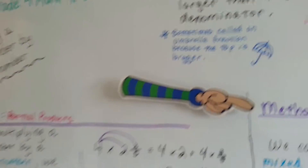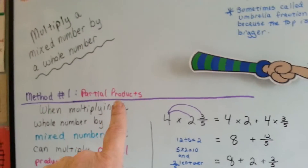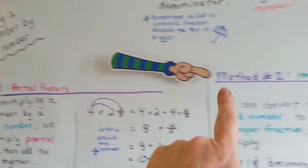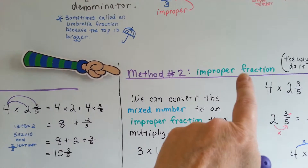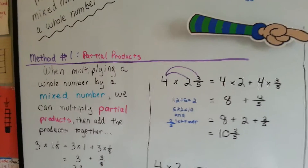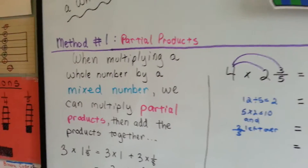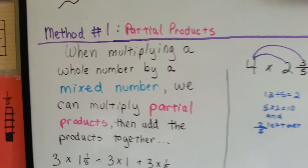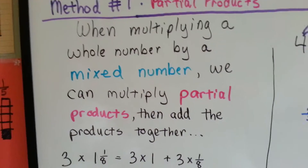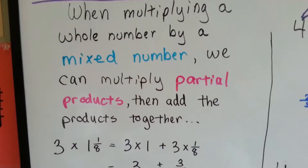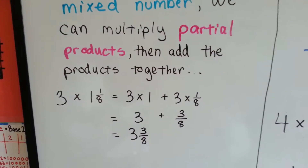So there are two methods: the partial products method and the improper fractions method. Starting with partial products — when multiplying a whole number by a mixed number, we can multiply partial products, then add the products together.